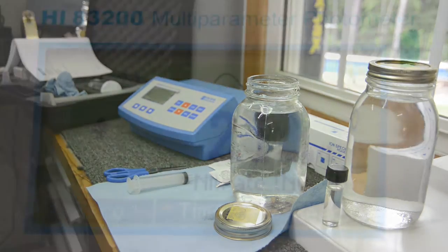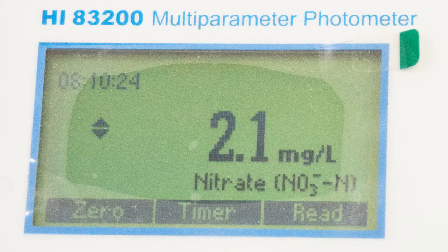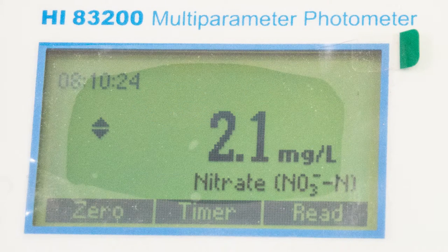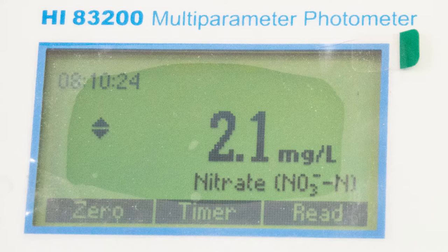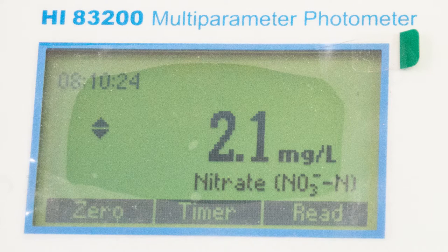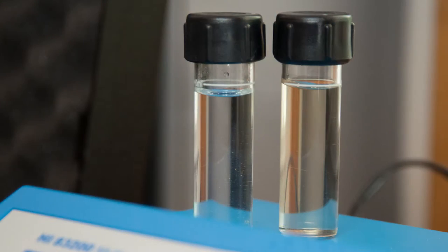We'll hit our timer again, and we ended up with 2.1 milligrams per liter, which is pretty good. We started out at 0.5, we ended up at 2.1, so we had an increase of 1.6 milligrams per liter, or 1.6 parts per million of nitrate. You can see in the 'after' sample, it turned the water yellow.